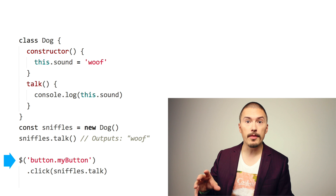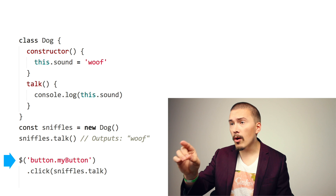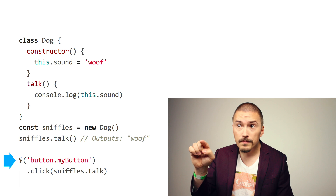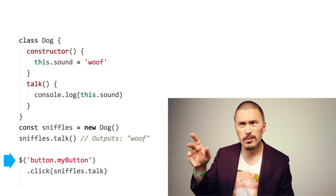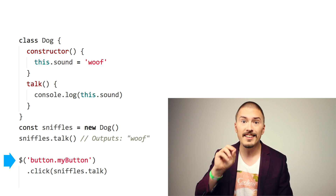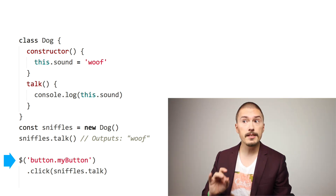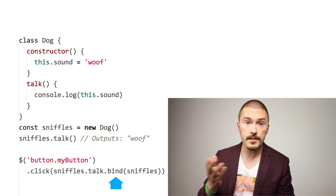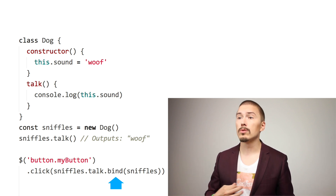If we assign the talk method to something like a click handler here, things will break because now the this keyword inside the talk method will not be sniffles. This is going to refer to something else — in this case the DOM element or something. What is important is that it isn't going to refer to sniffles like you would intuitively expect. To work around this you can use bind to force this to be sniffles. This is a very common thing to do but it hurts my gentle and beautiful soul to look at this code.